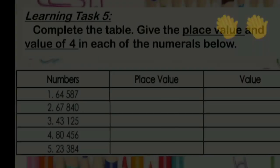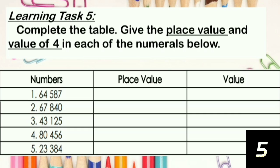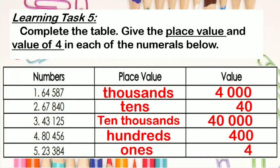Very good! We can now proceed answering Learning Task 5. Complete the table. Give the place value and value of 4 in each of the numerals below. Place value and value: Number 1, thousands, 4,000. Number 2, tens, 40. Number 3, ten thousands, 40,000. Number 4, hundreds, 400. And number 5, ones, 4.